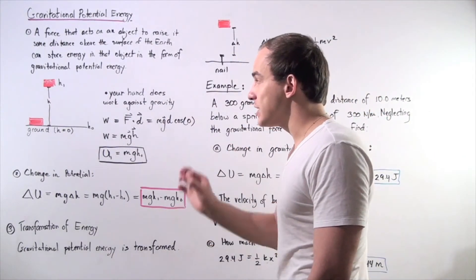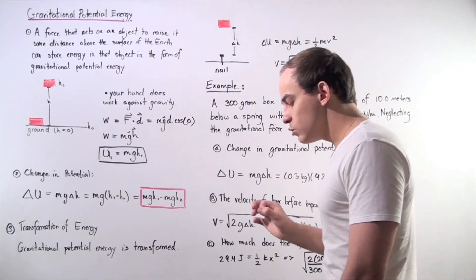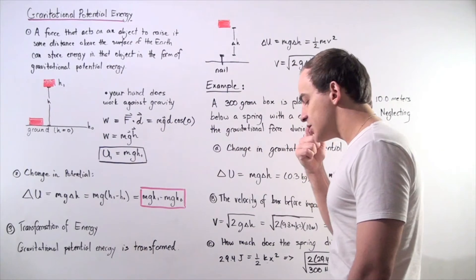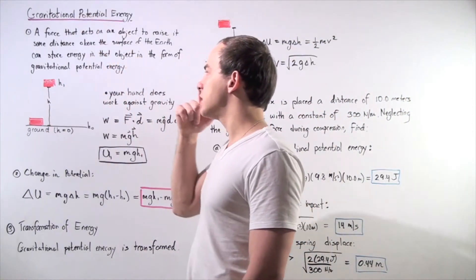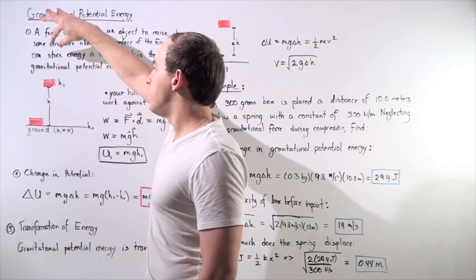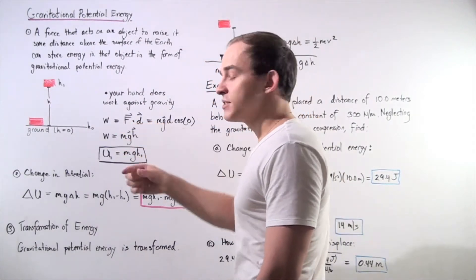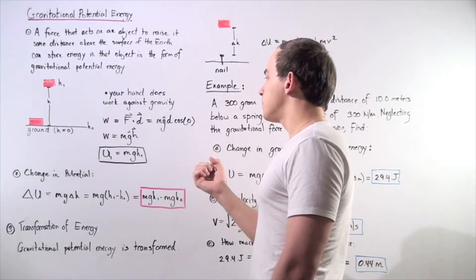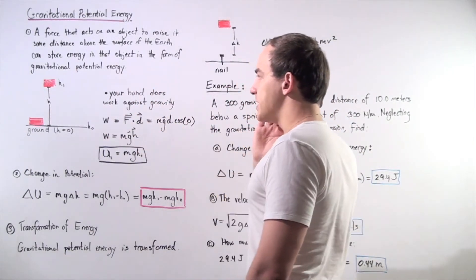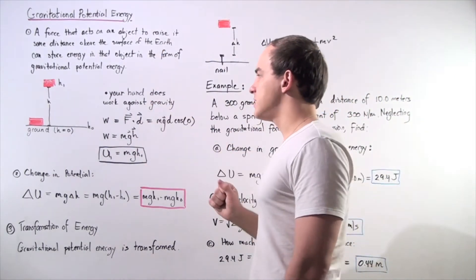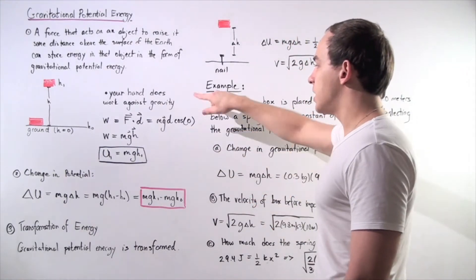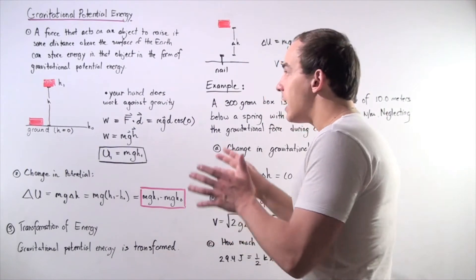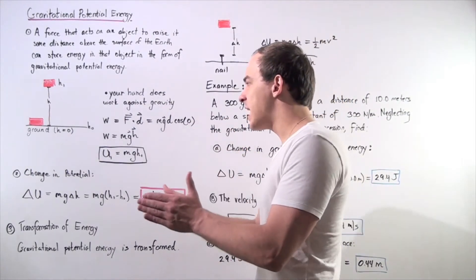Because the force is constant, we can use the equation: work equals the dot product of force times displacement. Our force is m times g, since we assume the object is not accelerating as we pull it up, meaning the pull force equals mg. The magnitude of the displacement is d, and we multiply by the cosine of the angle between force and displacement — cosine zero equals one since they point in the same direction. So we're left with m times g times h.